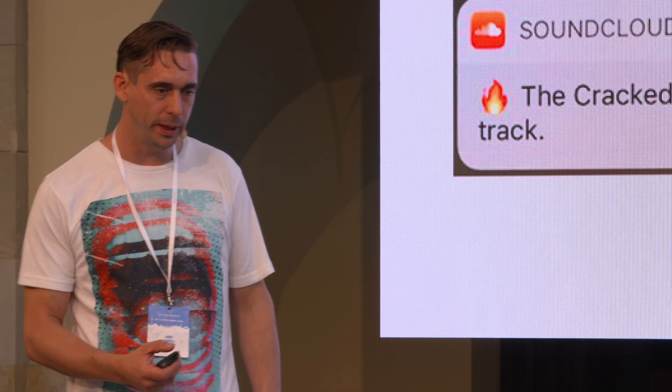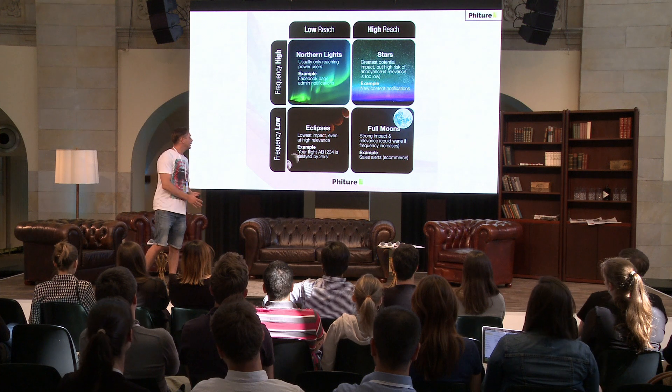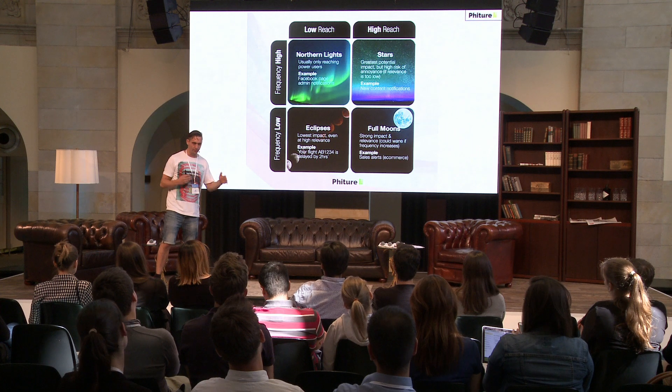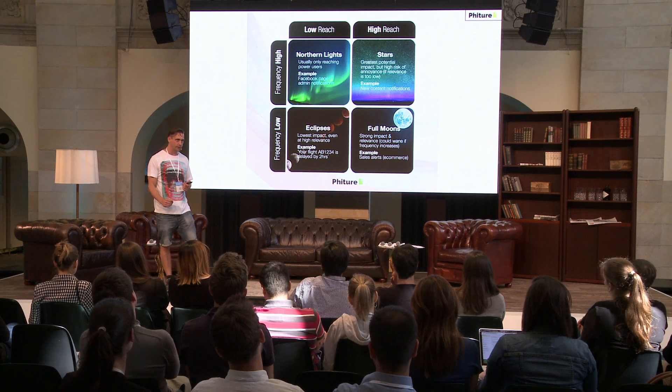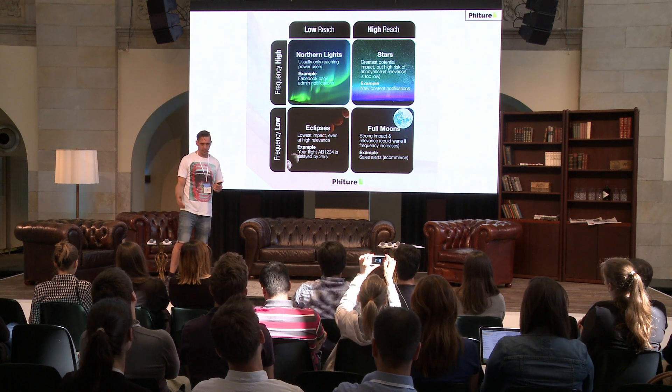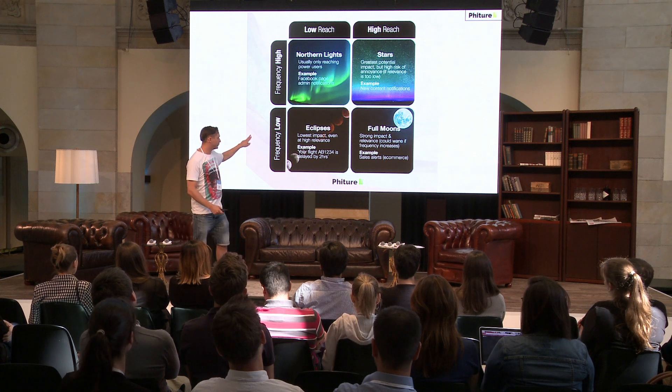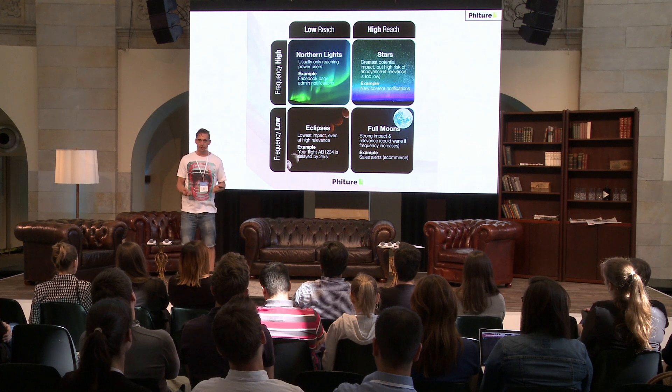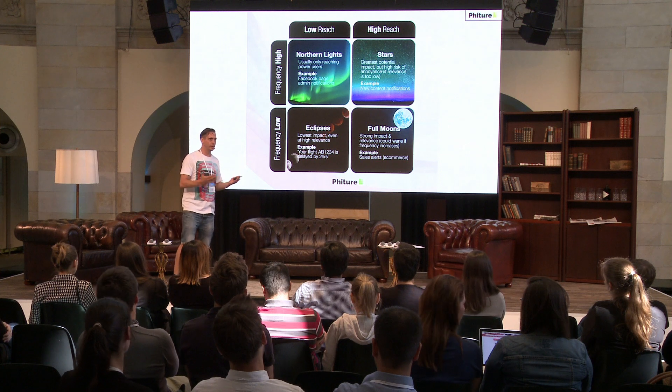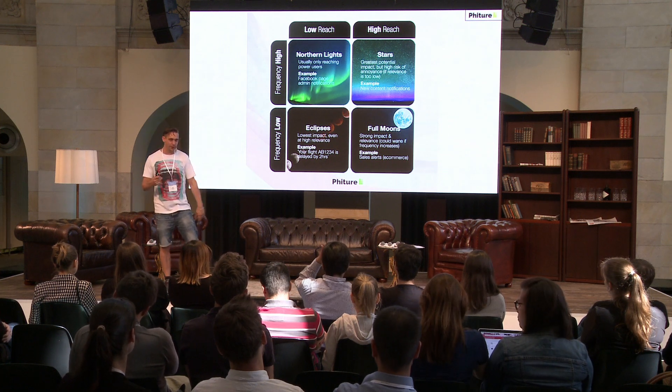I put together this colorful two-by-two matrix with celestial themes to help conceptualize the different kinds of notifications you probably have in your system and to think about which ones are going to have the highest impact. Starting with stars — there are millions of stars in the sky, they're high frequency and everyone can see them. These are high reach and high frequency. A great example of a high reach, high frequency notification would be something like 'there's new content' — in SoundCloud's case, new tracks hitting the platform from people I follow. You can generate a lot of notifications with these, and hence these are great notifications to have.